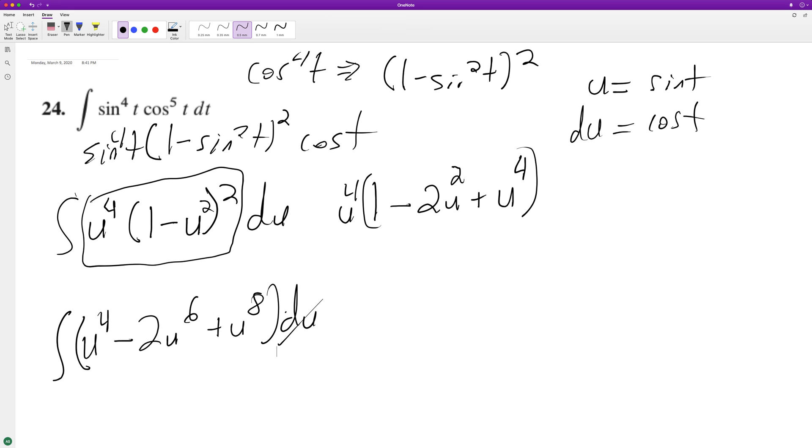So when we integrate, the du goes away and we're left with u to the fifth over five minus two u to the seventh over seven.